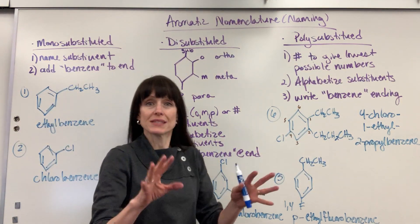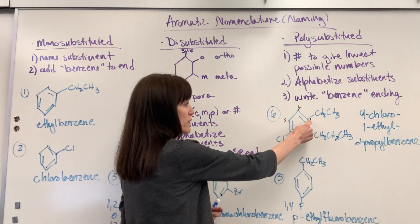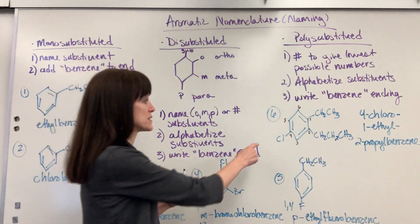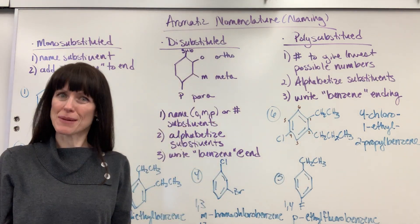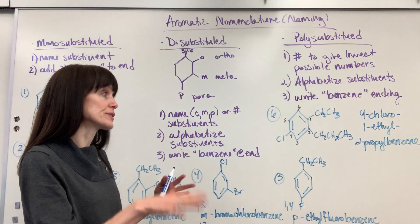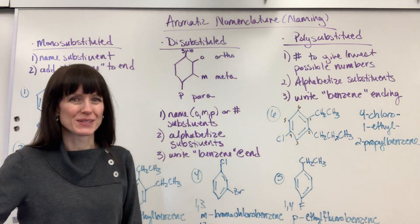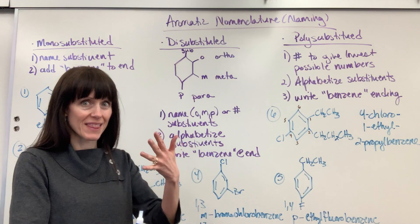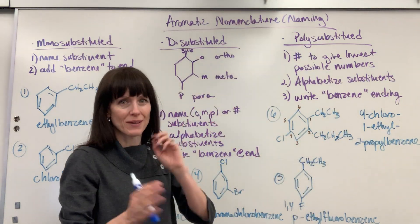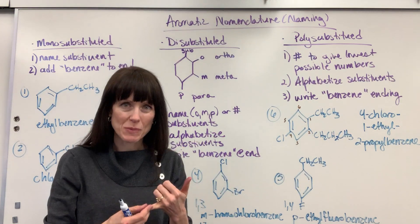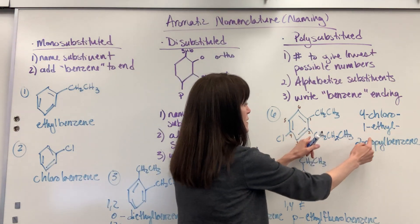Look at this benzene ring — we have three substituents: an ethyl, a propyl, and a chloro. I want to give the smallest numbers possible. Starting right here: one, two, three, four — that gives me a one, two, and four. Now notice if I'd started with the chlorine, it would have been a one, four, and five — those are larger numbers. So you always number it to give you the smallest numbers possible. You can also go counterclockwise. All right, we do this alphabetically: chloro, then ethyl, then propyl. We have 4-chloro-1-ethyl-2-propylbenzene. Remember: dashes between numbers and letters, commas between number and number. And there is our polysubstituted example.